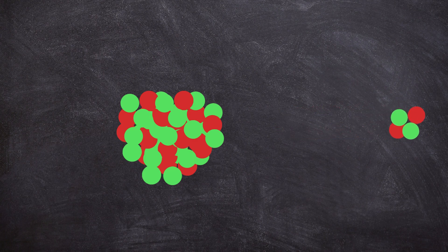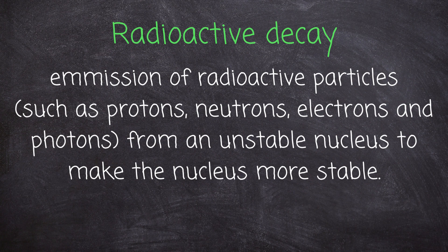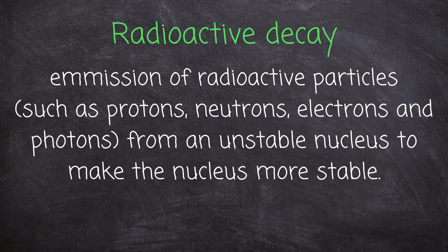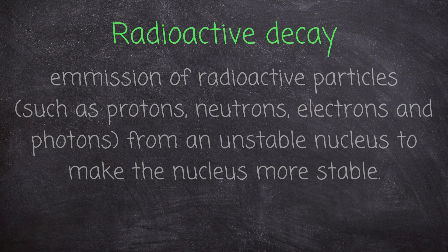Radioactive decay refers to the emission of radioactive particles such as protons, neutrons, electrons, and photons from an unstable nucleus to make it more stable. There are three types of radioactive decay: alpha decay, beta decay, and gamma decay.